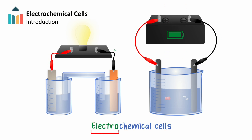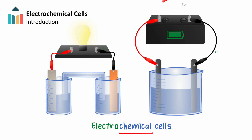"Electro" refers to the electrical current, and "chemical" refers to the reacting chemical substances. In this video, we'll investigate the two types of electrochemical cells — starting with a general overview, and then diving into the specifics and usefulness of each cell.